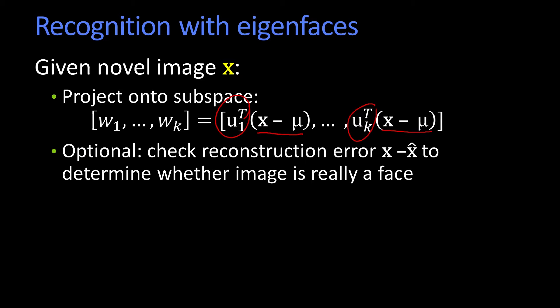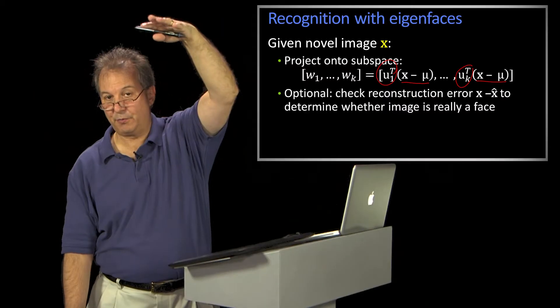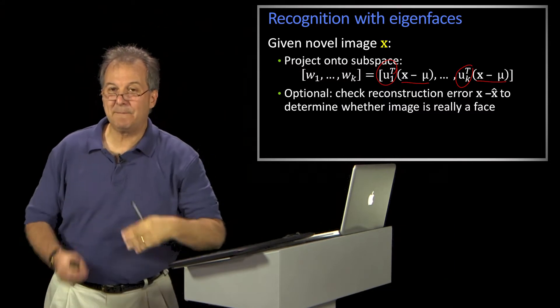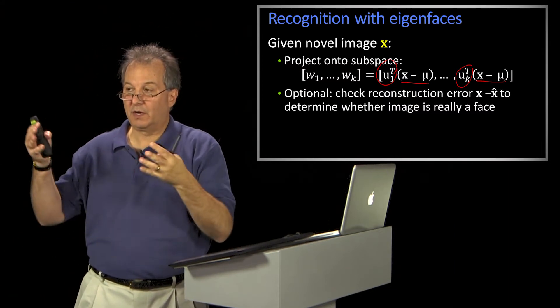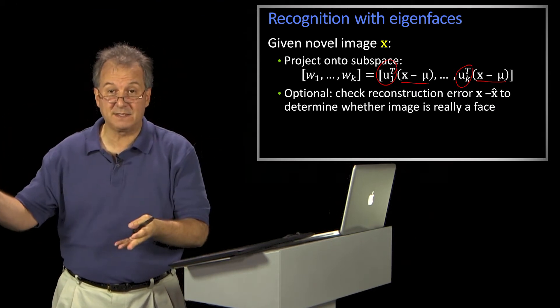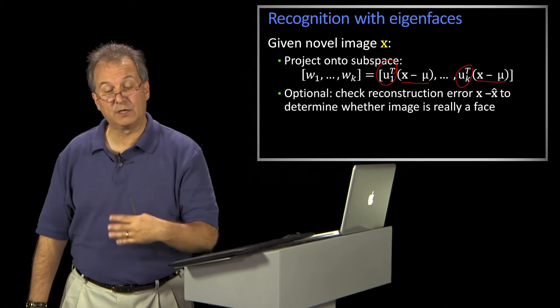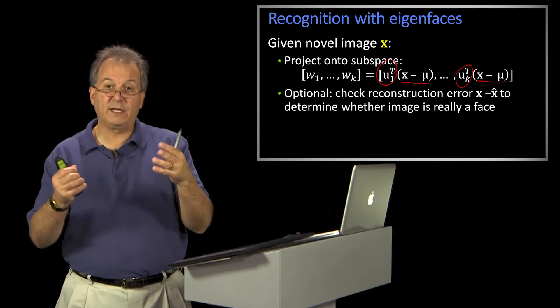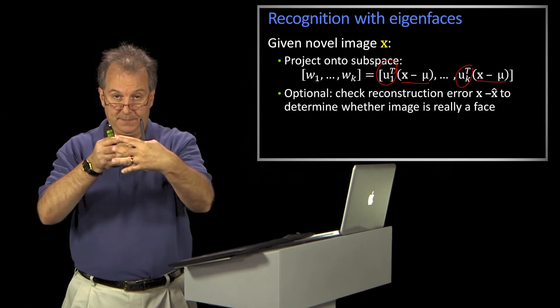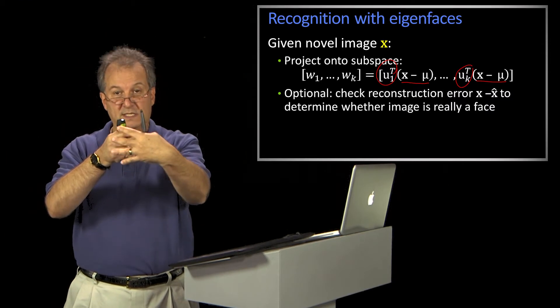There's something optional we can do here. Suppose I'm not really sure that what you gave me was a face image. What I can do is reconstruct using those coefficients. If you gave me some other 10,000-dimensional vector — say, three guys on a bicycle — and I try to make that image by summing up 100 eigenvectors from the face space, I can't reconstruct it well. The only images I can reconstruct well are faces. So I could do the reconstruction, compare them, and say: this is not a face image.